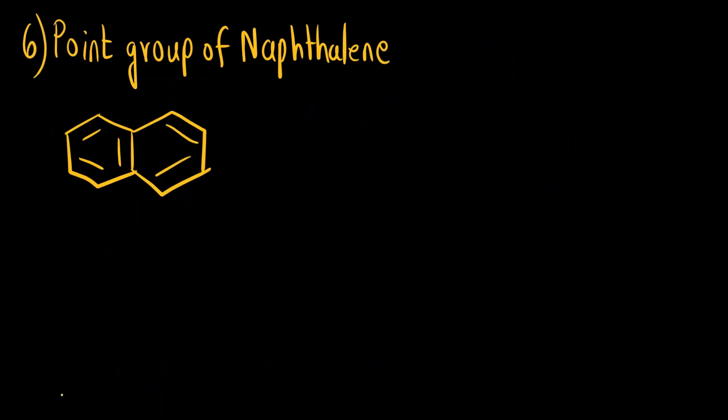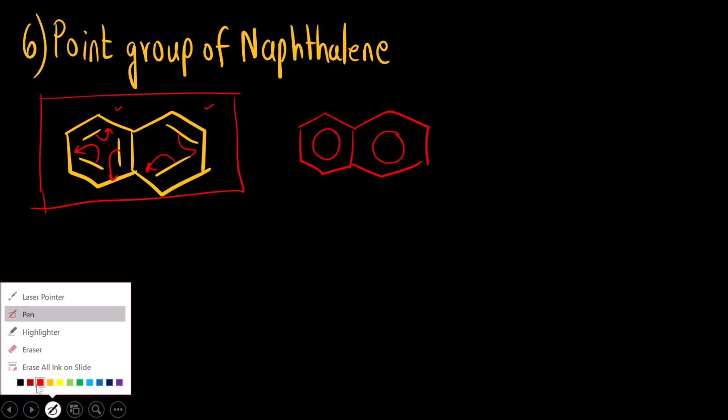Now let us see this question, point group of naphthalene. First if you see this is, let us say in one plane naphthalene molecule is in one plane. And before writing down the symmetry elements first you have to understand that all these π electrons are in conjugation. So you cannot say that this ring is different from this ring. To avoid confusion you can represent like this. Both are similar. Now we can draw the symmetry elements.